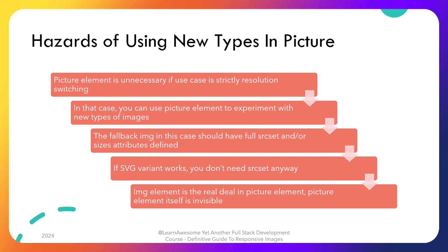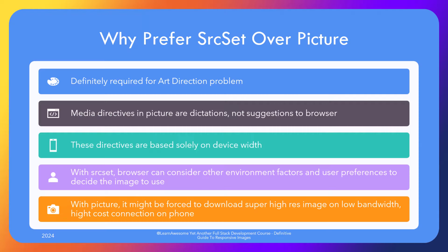As a bonus item, note that the image element is not an unnecessary fallback in the picture element — it is a critical piece, and all source elements are simply being used to feed the required source to the image element. Picture element is invisible on its own; it relies solely on the image element. We said a couple of times to prefer source set over picture elements unless using it for art direction. The main difference is dictation versus suggestion. In source set, we suggest to the browser which image variant to use, but the browser is the deciding authority and can take other information like network conditions and pixel density into account. It's a lot more flexible and does not dictate the choice.